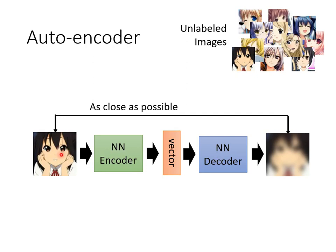Consider the picture as a vector. We want the distance between this vector and the output of the decoder to be as small as possible. Some people call this approach reconstruction. We first compress an image into a vector, and then the decoder needs to reconstruct the original image based on this vector. We hope the original image and the reconstructed image to be as close as possible.